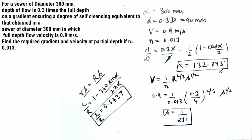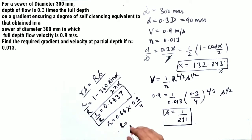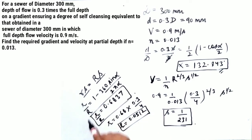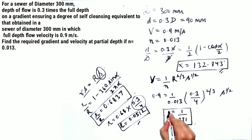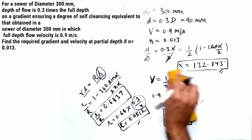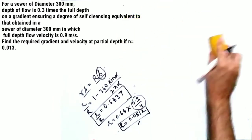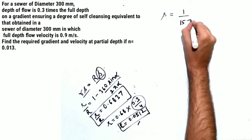From r/R = 0.6837 and capital R = D/4 = 0.3/4, small r = 0.6837 × 0.075 = 0.0512 m. You now know small r, capital R, and capital S = 1/231. From the self-cleansing condition r·s = R·S, small s = (R × S) / r, which gives small s = 1/157 (rounded). This is the gradient for the partial depth condition.